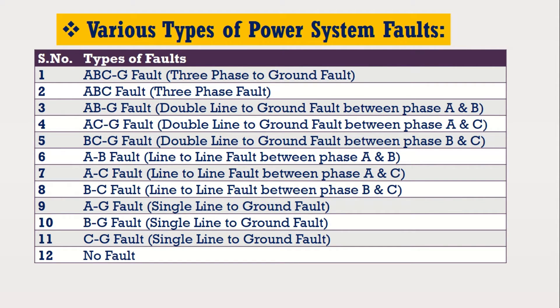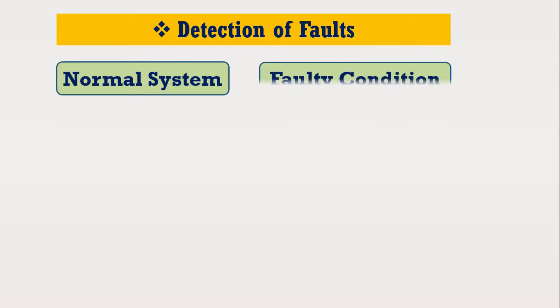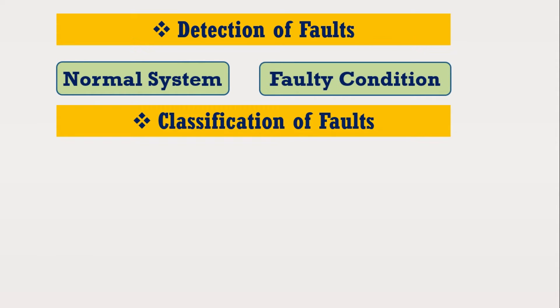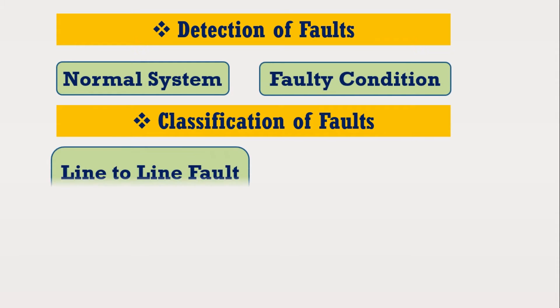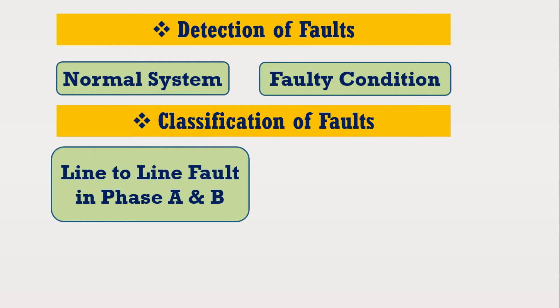Suppose we want to propose a technique that can automatically detect and classify all these faults. By detection, the technique is capable of distinguishing between normal condition and faulty condition in the power system. By classification, the technique is capable of distinguishing between different types of faults — it can identify in which phase a fault has occurred and in which phase it has not.